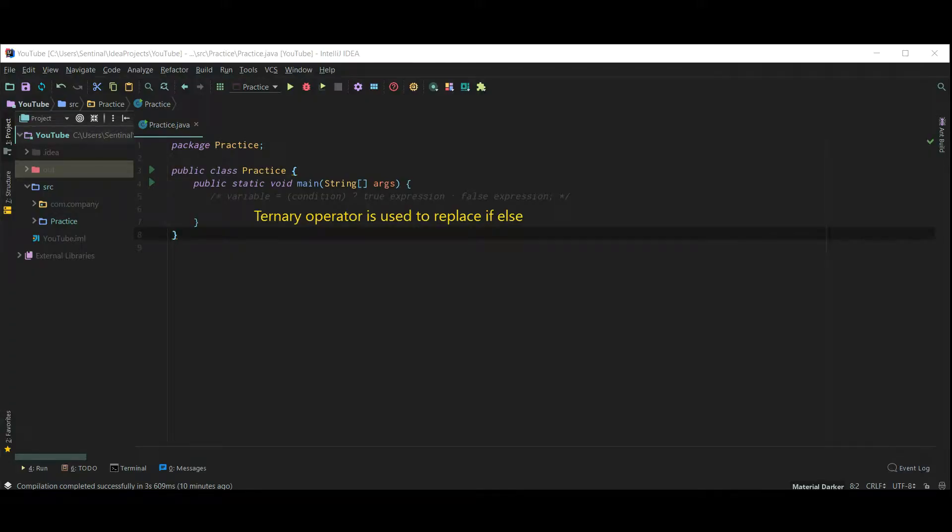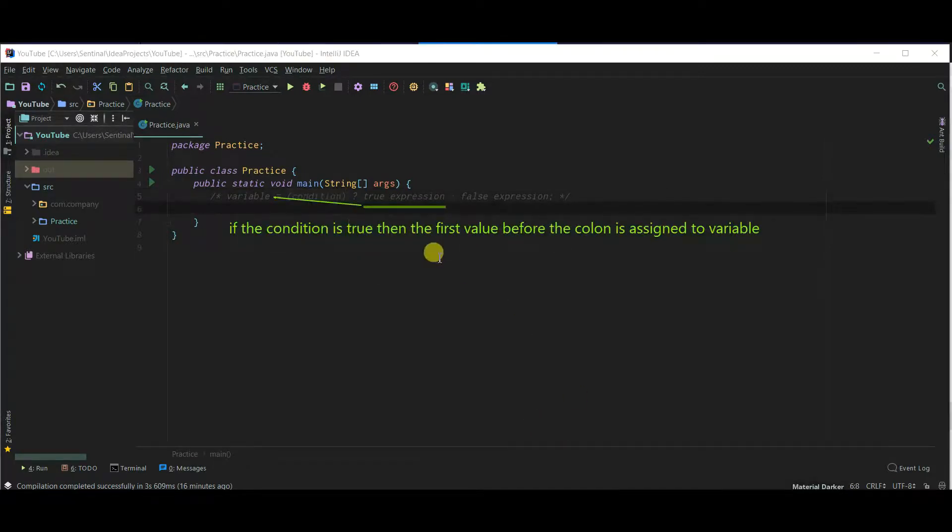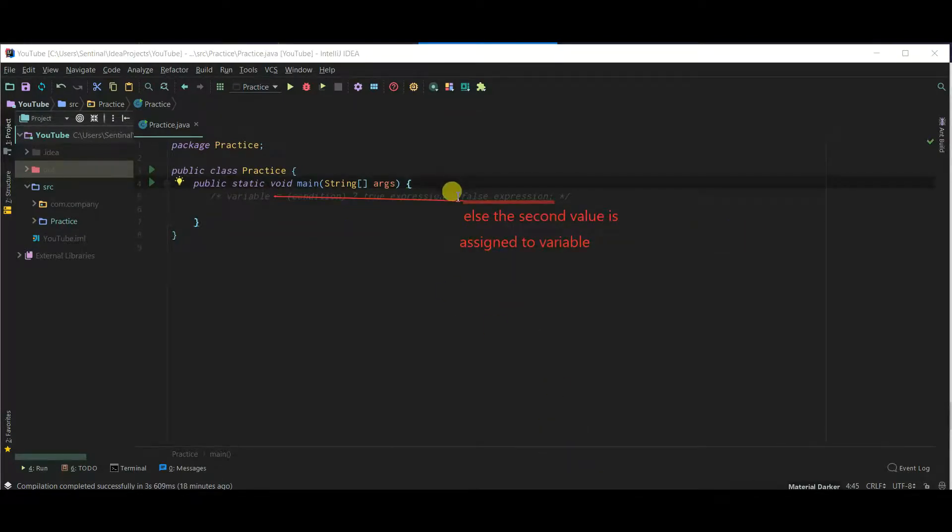Ternary operator is used to replace if else. A condition is a boolean expression which evaluates either to be true or false. If the condition is true, then the first value before the colon is assigned to variable. Else, the second value is assigned to variable.